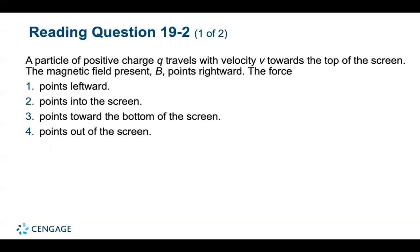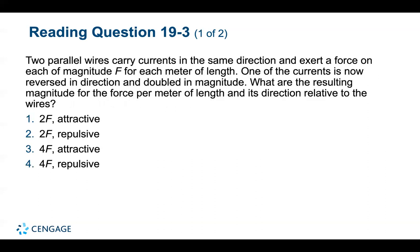Second question: a particle of positive charge Q travels with velocity V towards the top of the screen, and the magnetic field B points rightward. The force points into the screen. Third: two parallel wires carry currents in the same direction and exert a force of magnitude F per meter of length. One current is reversed and doubled in magnitude. The resulting force per meter is 2F, repulsive.